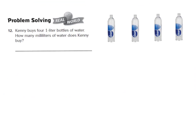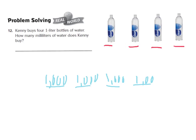Let's look at our problem-solving questions. Number 12 says: Kenny buys 4 one-liter bottles of water. How many milliliters of water does Kenny buy? I have 4 liters of water, and each one is equal to 1,000 milliliters. Draw your 4 lines representing 4 liters and write that each one equals 1,000 milliliters. So you're really saying 4 times 1,000, which equals 4,000. Kenny has 4,000 milliliters of water.